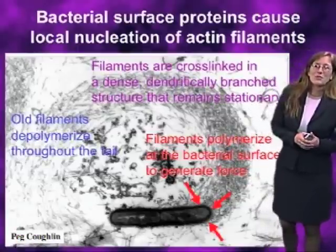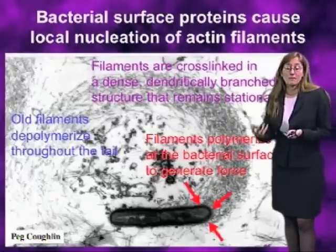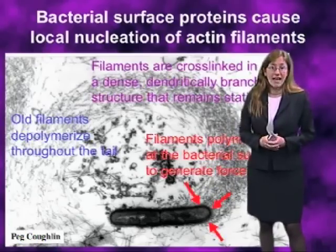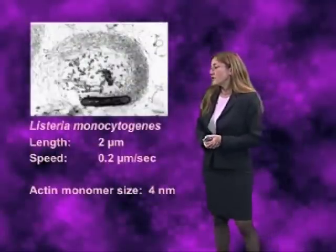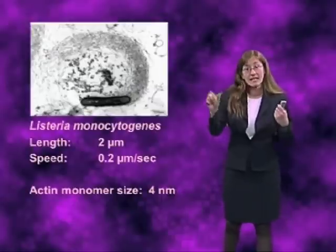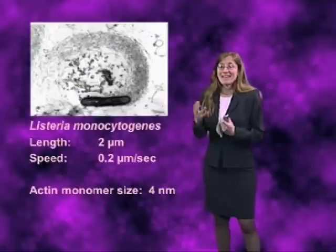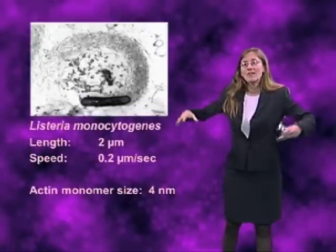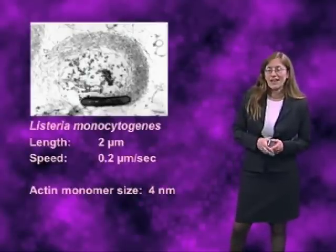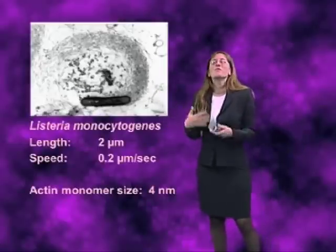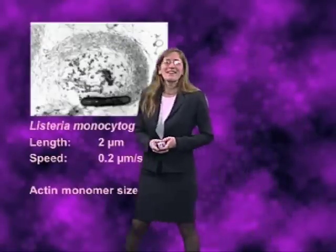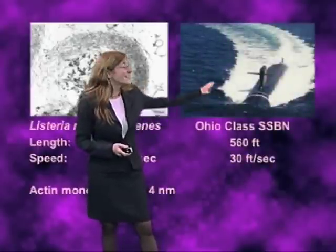To put some numbers on this: Listeria monocytogenes is about 2 microns in length and moves through a cell at a typical speed of about 0.2 microns per second — meaning it takes 10 seconds to move one body length — through this non-intuitive mechanism of piling up actin monomers, each between 4 and 5 nanometers across, behind it. If we scale this up to a macroscopic object, my graduate student Fred Sue has suggested the thing that looks most structurally like Listeria monocytogenes is the Ohio-class nuclear submarine.